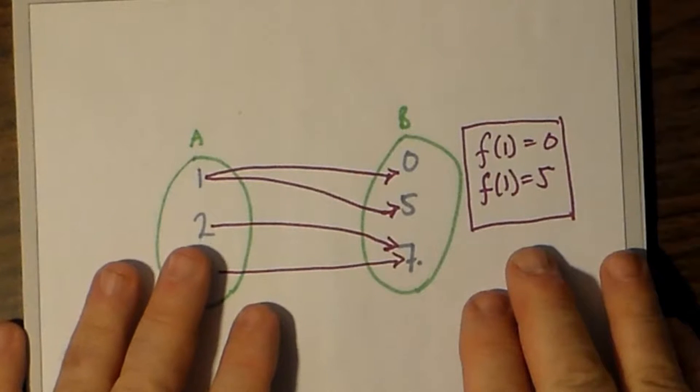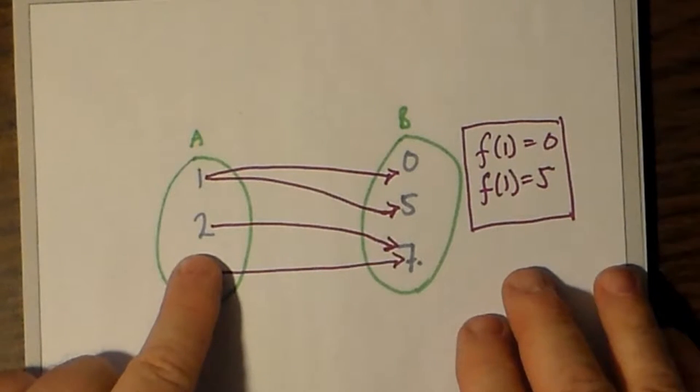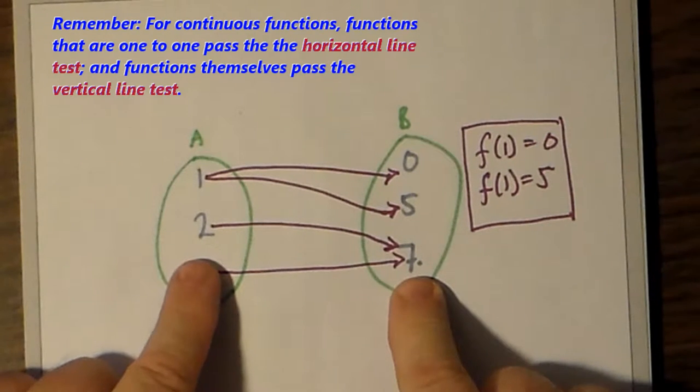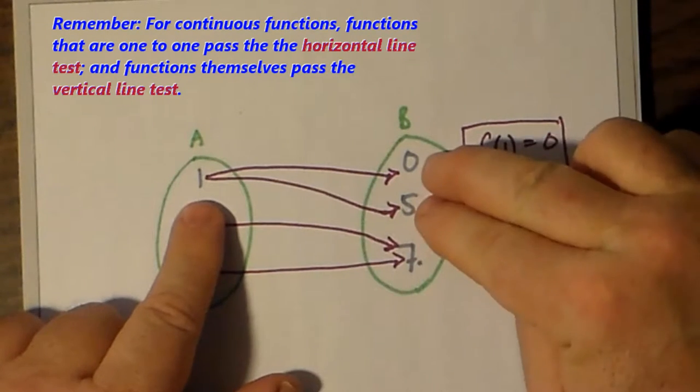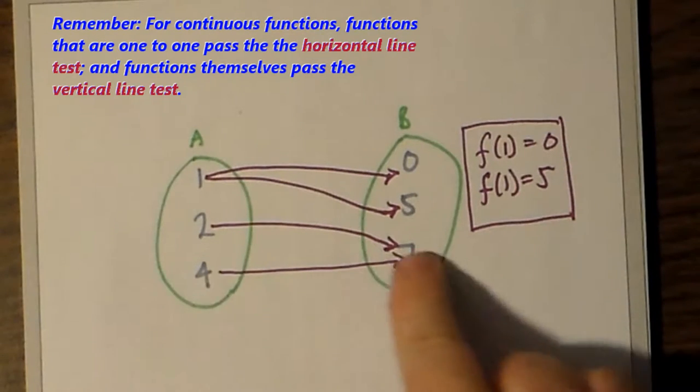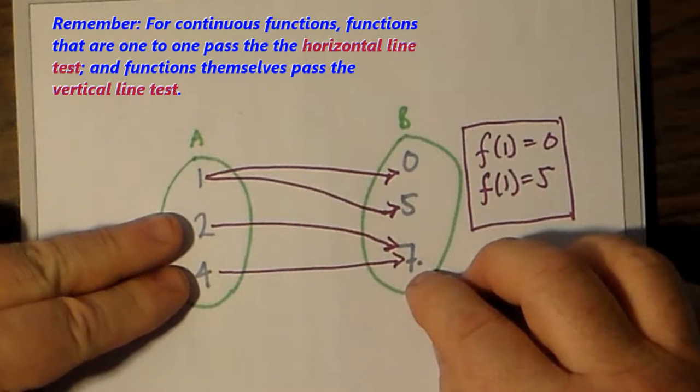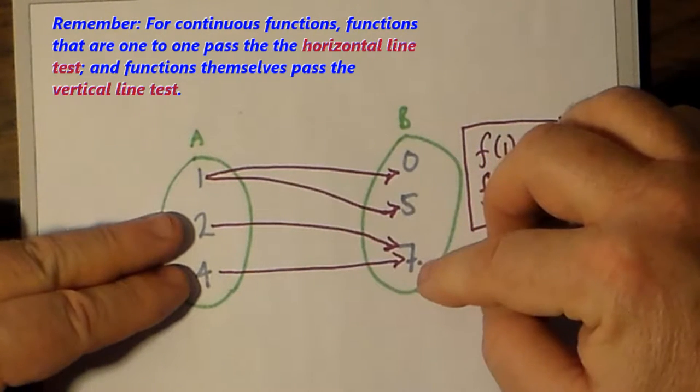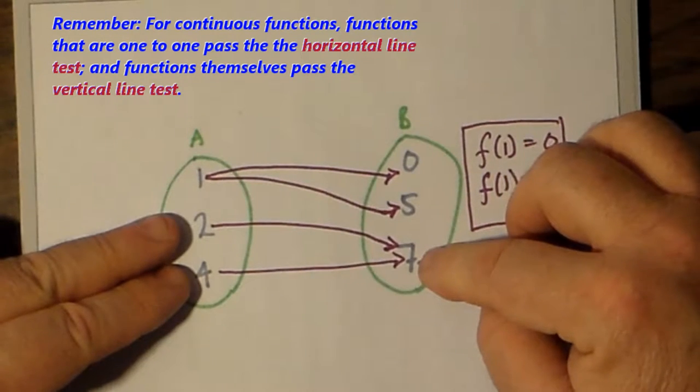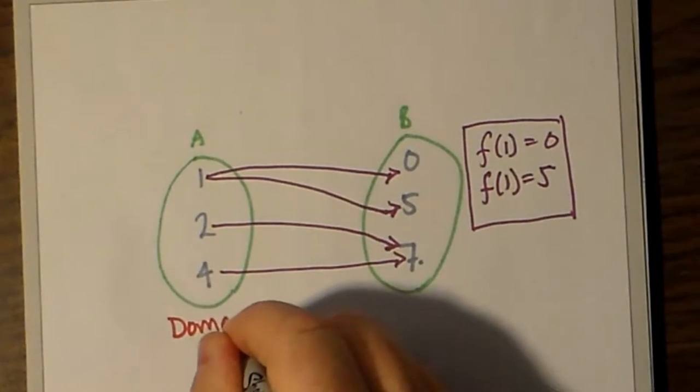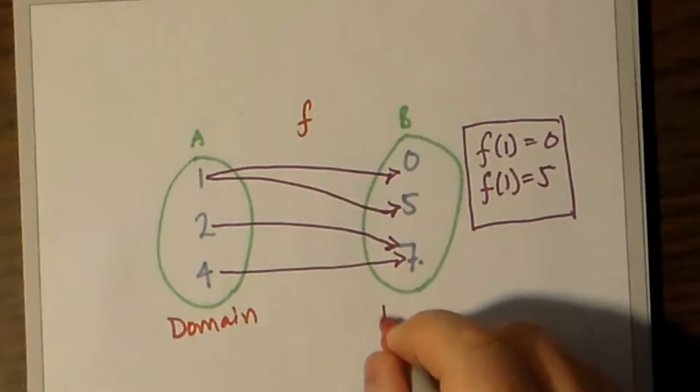However, the opposite is not true. It is quite acceptable to say f of 2 is 7 and f of 4 is 7, as is suggested in this illustration. The definition of a function requires that one value of A, the domain, leads only to one value in B. Functions prohibit a value in A from having two different images in B. Notice that the reverse doesn't break any rules. Two elements in A can be mapped into the same image in B.